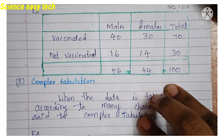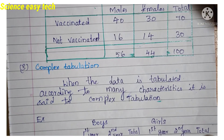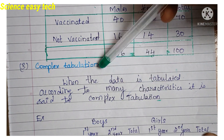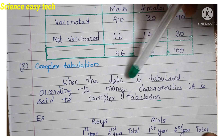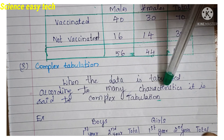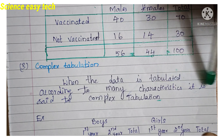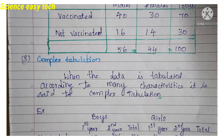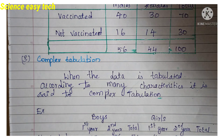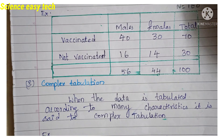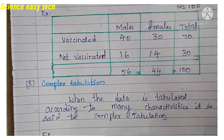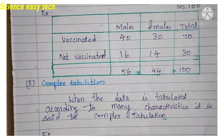Next is complex tabulation. When the data is tabulated according to many characteristics, it is called complex tabulation. Complex means many — you are representing more than two characteristics in the same table.